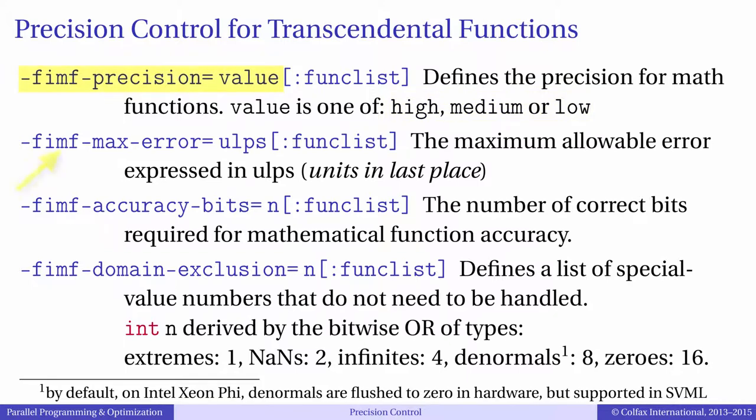This and other arguments may be applied to all transcendental functions in the Intel math library or to a list of specific functions. If you want exact control over how many significant bits are accurately computed, you can use arguments FIMF max error or FIMF accuracy bits.